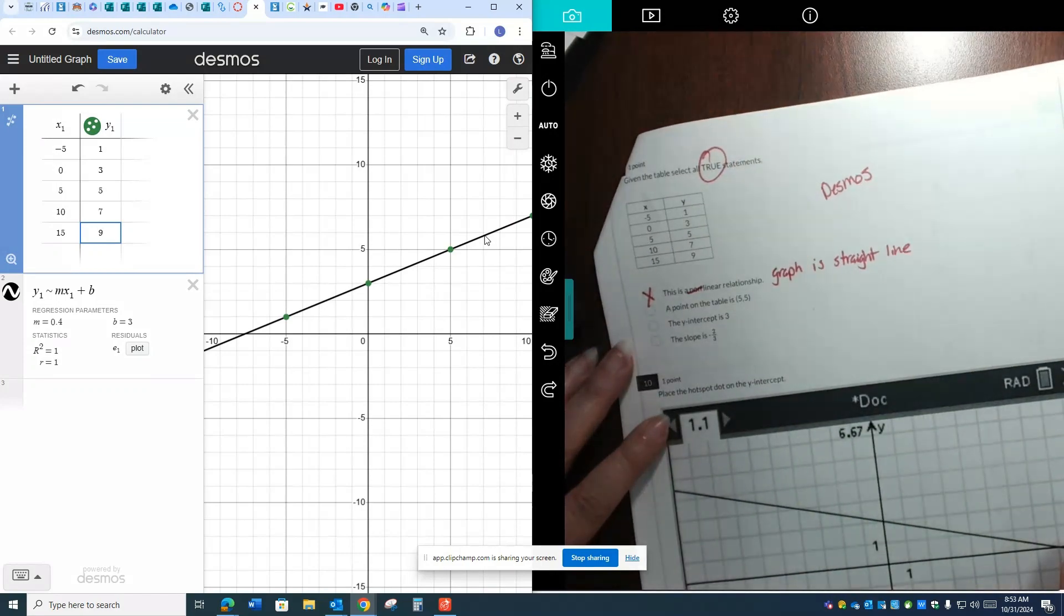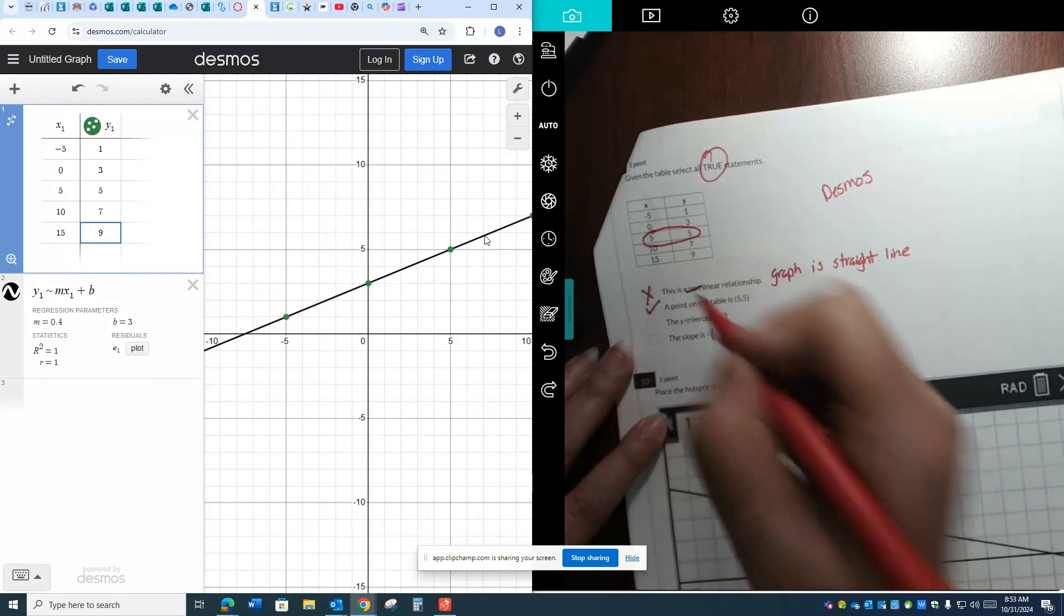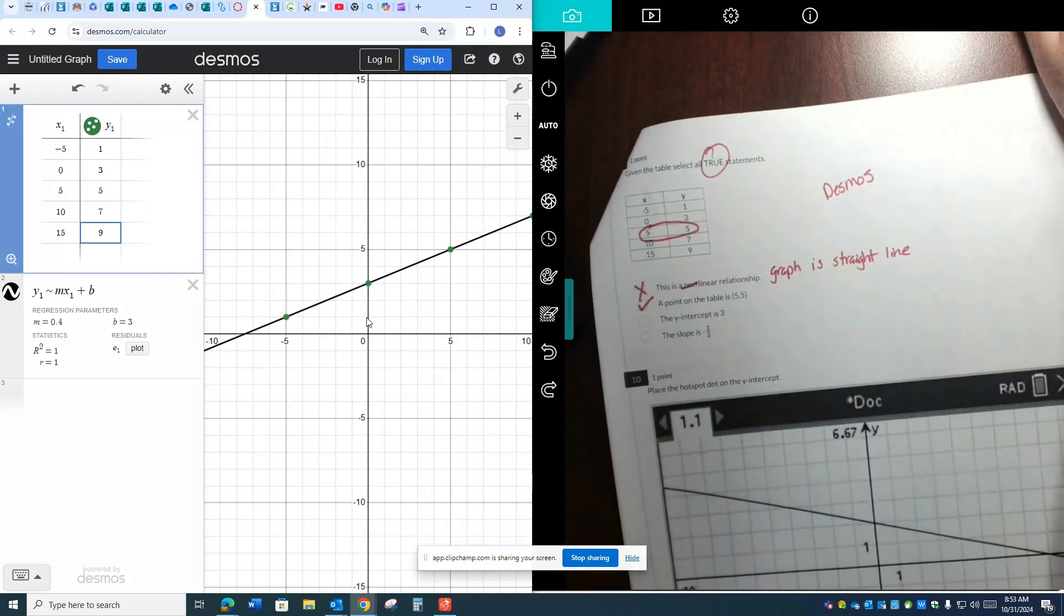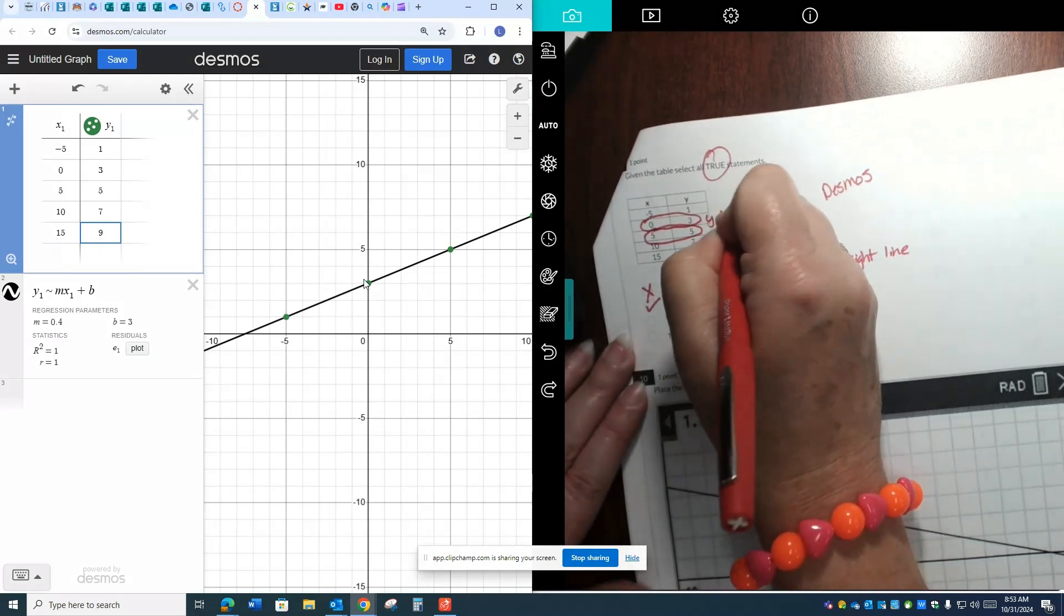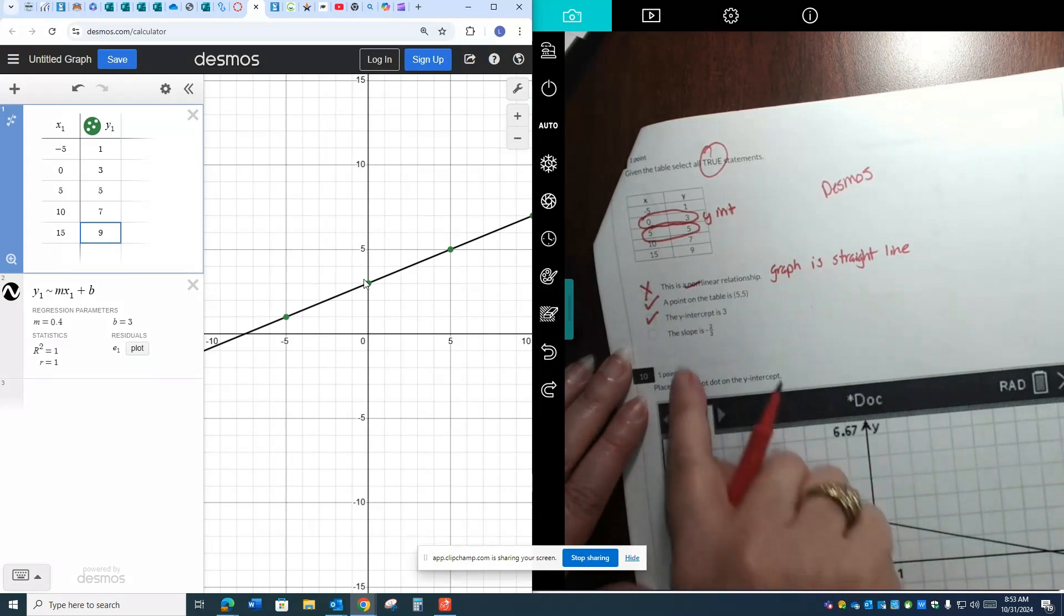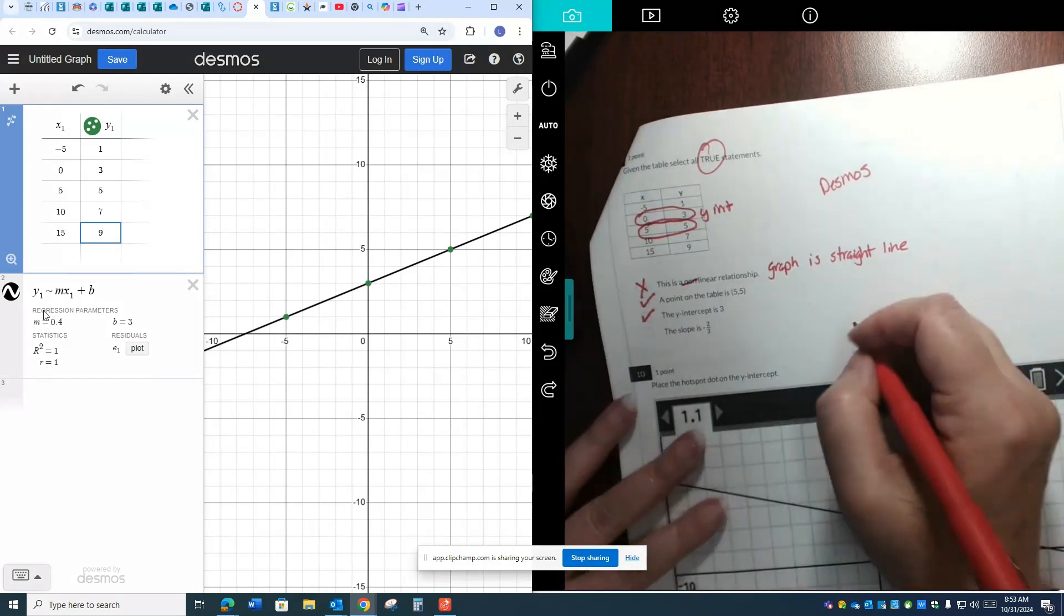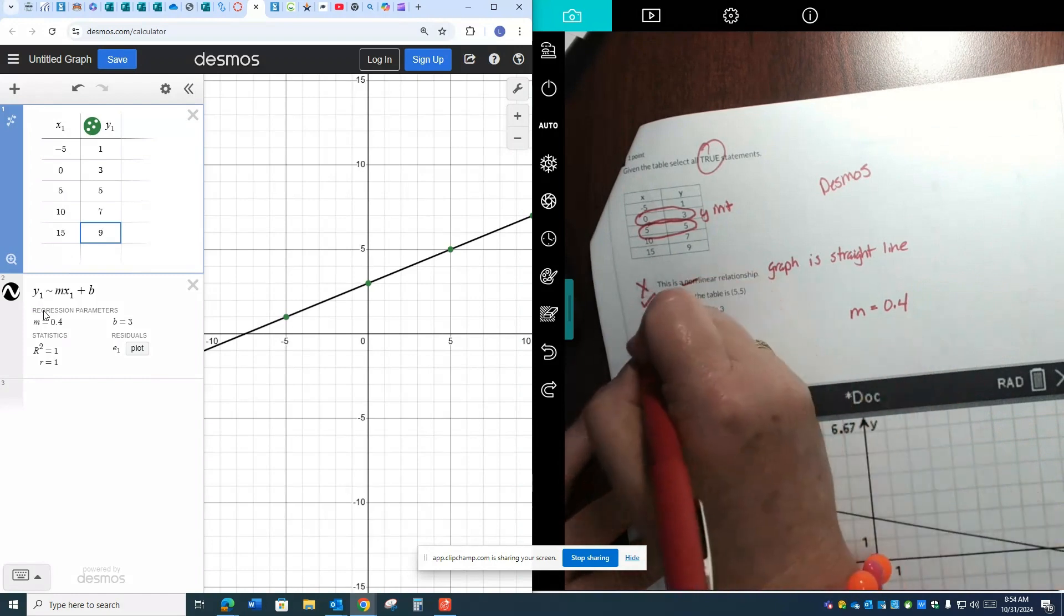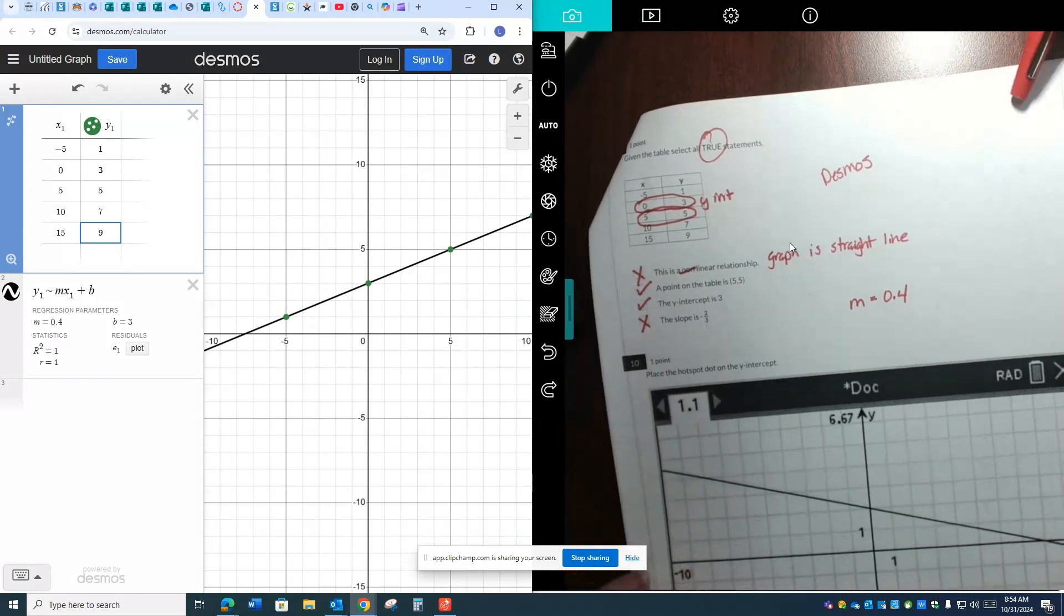It says a point on the table is 5, 5. Yeah. There it is right there. 5, 5. That is true. The y-intercept is 3. If we look at our graph, it's crossing right here at the 1, 2, 3. I can also see it in the table. That is my y-intercept. Zero's partner, right? That is true. And then the slope is negative 2 thirds. What I see from this graph and from right here, it says my m is 0.4. That is not negative. It is positive. Also, I can see from the graph. Do you see how the line is going up from left to right over here on the Desmos screen? That is positive. So those are my two true statements on that one.